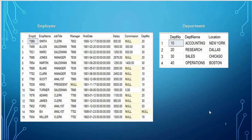Hi everyone. In this video we'll find how to get non-matching records from two tables. We have an employee table and a department table. The Operations department has not been assigned to any employee in the employee table. Also, the employee Bill, who is an analyst, has not been assigned any department. So in this video we'll write a SQL query to find non-matching records from these two tables.